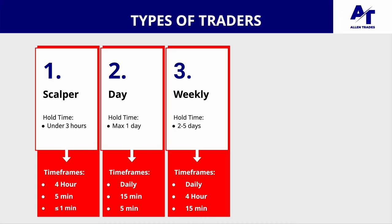The third type is weekly trading. The hold time is usually around two to five days, and the timeframes used are the daily, the four hour, and the 15 minute. When I say the timeframes that are used, you're going to do your overall analysis on the first timeframe — the daily — to see where the market is most likely going. Then go down to the four hour for more data, and your entries usually come on that last timeframe, the 15 minute. For the day trader, you'd enter on the five minute; for the scalper, on the one minute or 30 second chart.